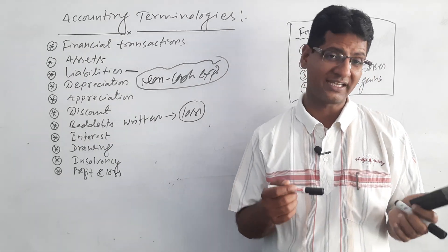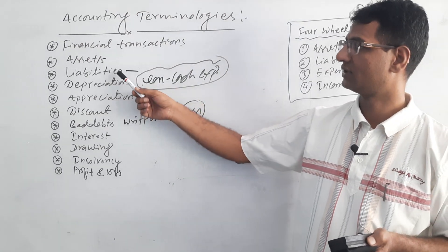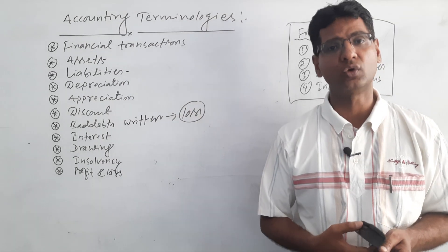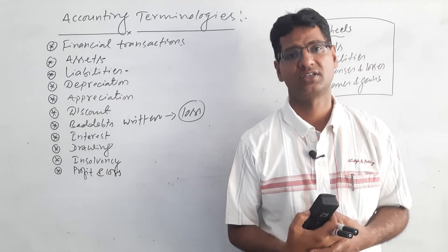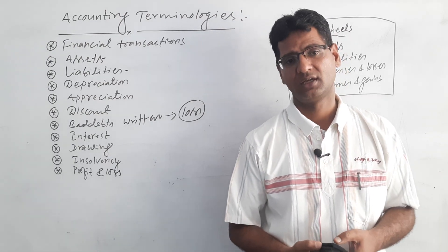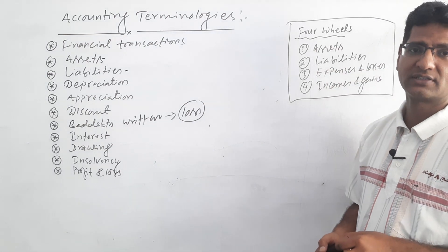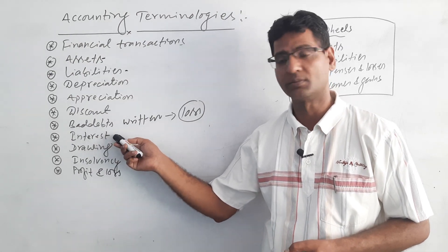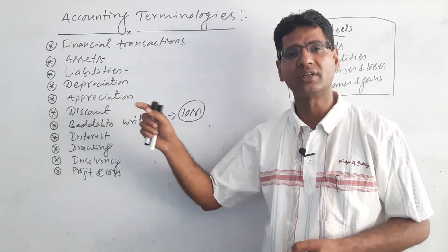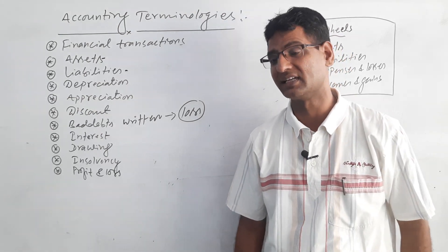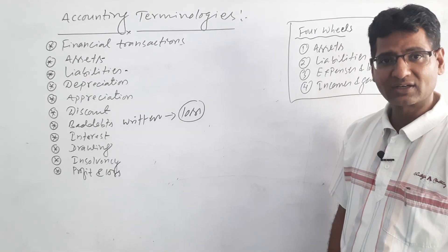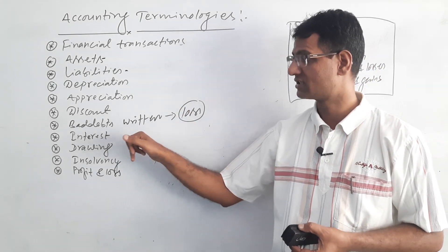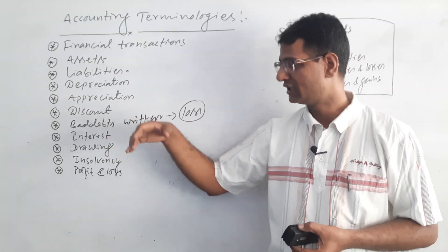Interest is the excess amount paid beyond the principal amount. Liabilities are of two types: short-term and long-term. If a business takes a loan from a bank or issues shares and debentures, we have to pay interest to the providers. Interest is a fixed cost of business — every month we pay an exact rate and amount to the bank, debenture holder, or bond holder. If we invest money in other areas, we receive interest income; if we take loans, we pay interest expense.